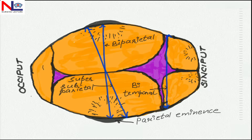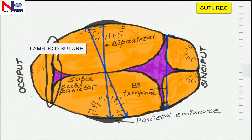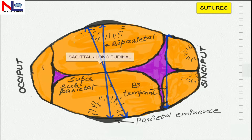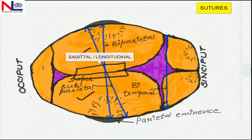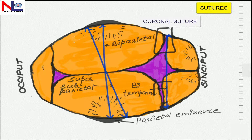Next comes the sutures. These are the cranial joints where two or more bones come closer. Viewing superiorly, posterior to that is a lambdoidal suture and it separates the occipital bone from the two parietal bones. Anterior to that is the sagittal suture, or longitudinal suture, which lies between the two parietal bones. Then there is the coronal suture, which separates the two frontal bones from the parietal bones.